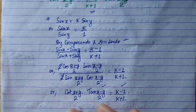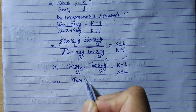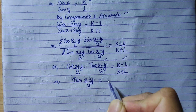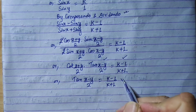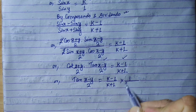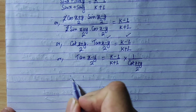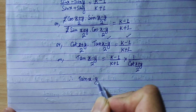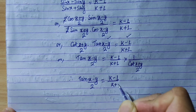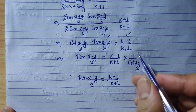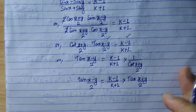So, tan of (x minus y) by 2 is equal to (k minus 1) by (k plus 1). Then cot of (x plus y) by 2 equals 1 upon cot of (x plus y) by 2, which equals tan of (x plus y) by 2. So, tan of (x minus y) by 2 is equal to (k minus 1) by (k plus 1).